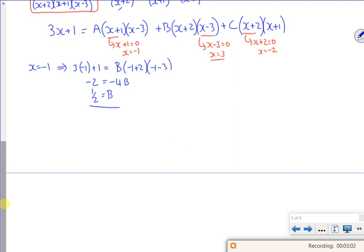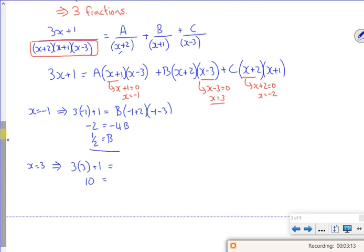So I'm going to try x is 3 now. So I've got 3 lots of 3 plus 1, so I've got 10. Right, so think about this though, so I'm putting in a 3. So I'll put a 3 into a second bracket now, it gives me a 0, so a disappears. If I put a 3 into the second bracket of b, it gives me a 0, so b disappears. So I'm left with C, which is a 3 plus 2 and a 3 plus 1. So that's going to give me 5 times 4, 20c. I'm going to get a half again. Yeah, that's good.